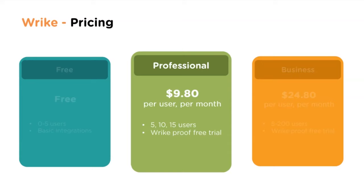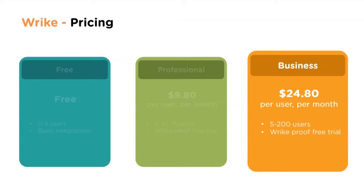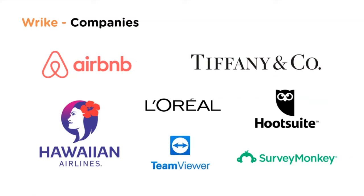Wrike pricing: 0 to 5 users with basic integrations is free. The professional version is $9.80 per user per month in slabs of 5, 10, and 15 users, with a free Wrike Proof trial. The business version supports 5 to 200 users at $24.80 per user per month. Companies using Wrike include Airbnb, Lowe's, TeamViewer, and Tiffany & Co.